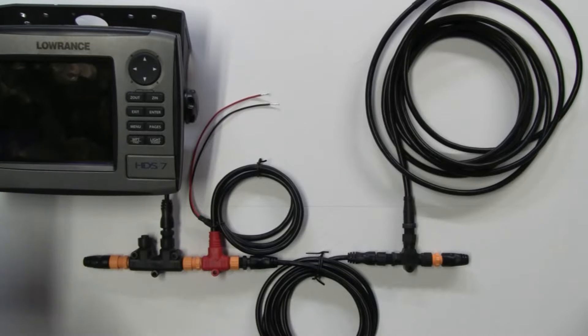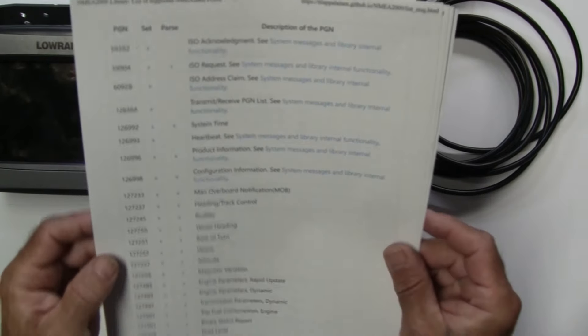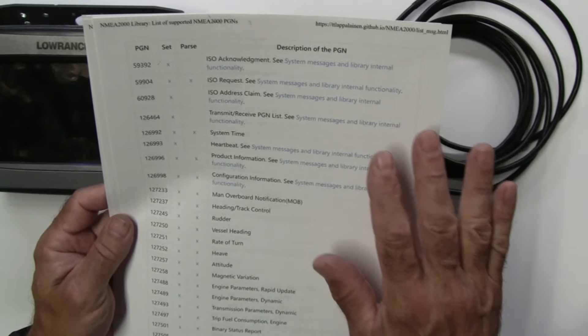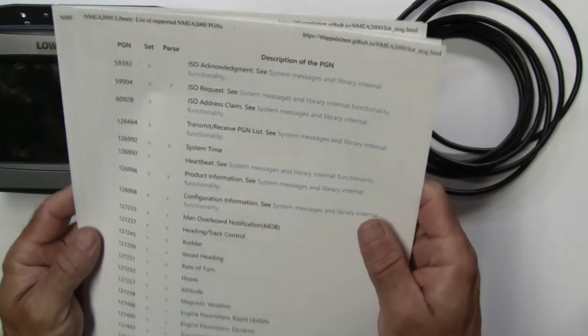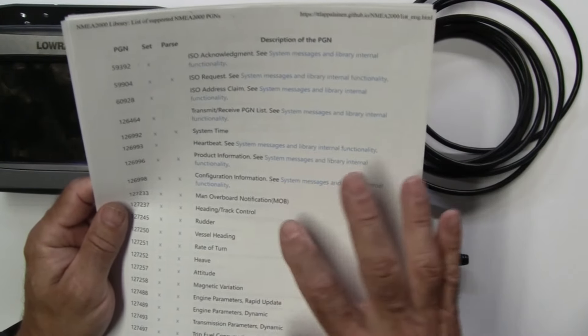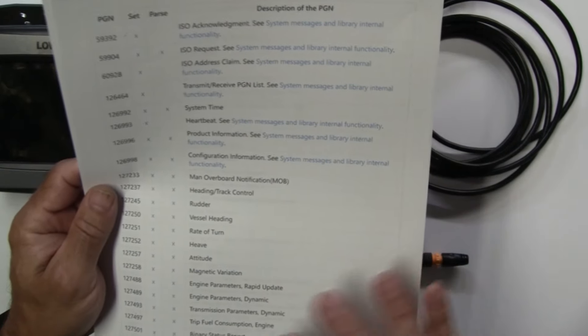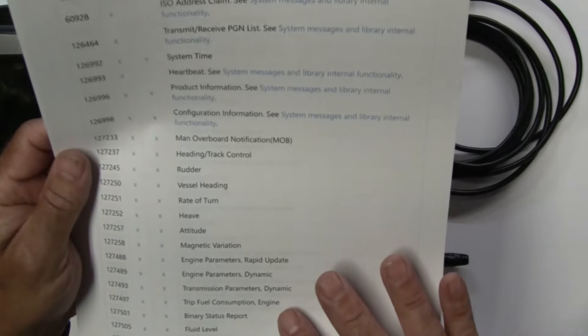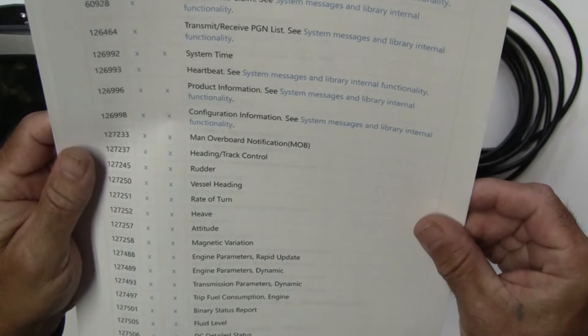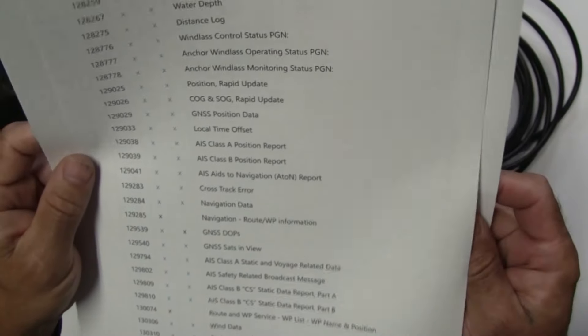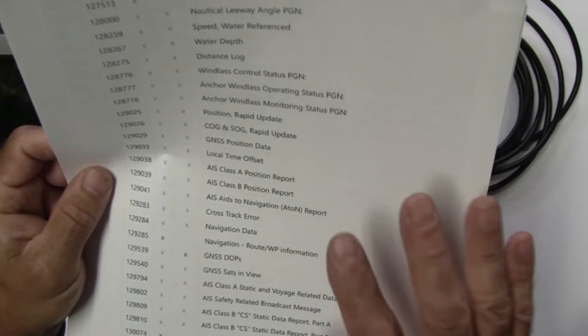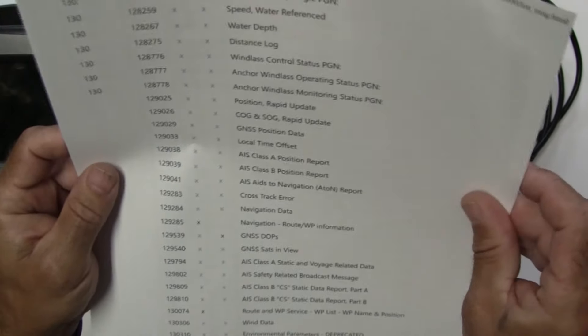Now I mentioned PGNs earlier. To give you an idea, here's a bunch of PGNs. There's a lot of things that can be transmitted - there's messages defined for attitude, heave rate of turn, vessel heading, rudder trip, fuel consumption. That would be of interest and actually typically shows up on some of the units like these Lowrance that I showed you before. Battery configuration, so there's just a number of things - navigation data, track errors. There's a significant amount of data that can be moved around in a NMEA 2k network.